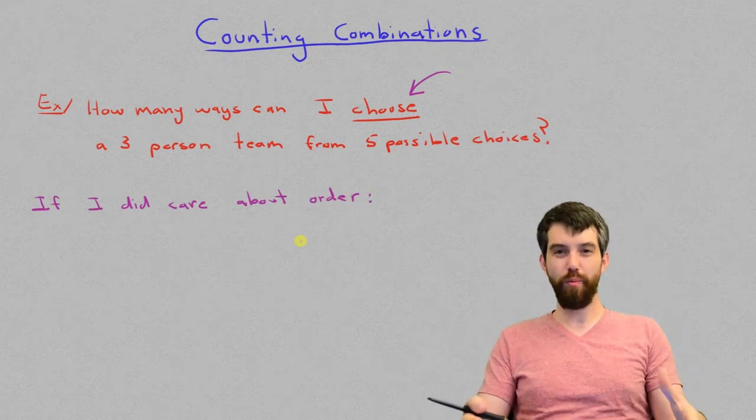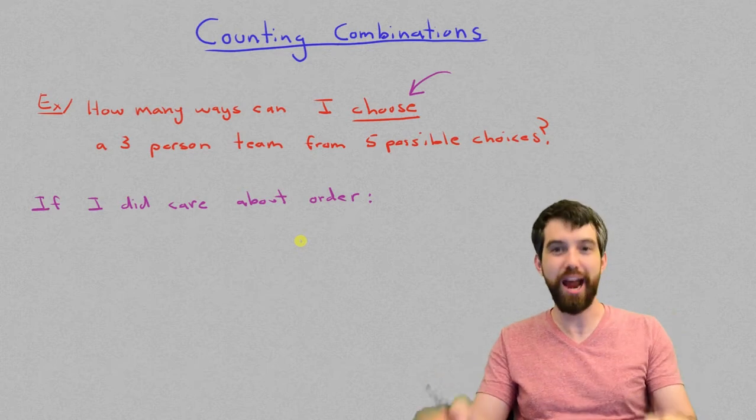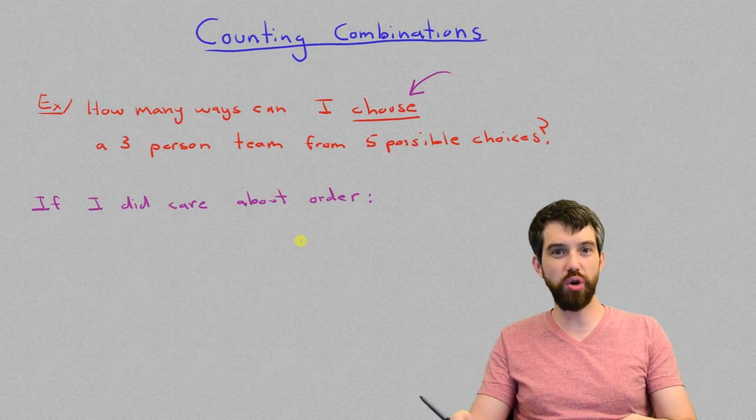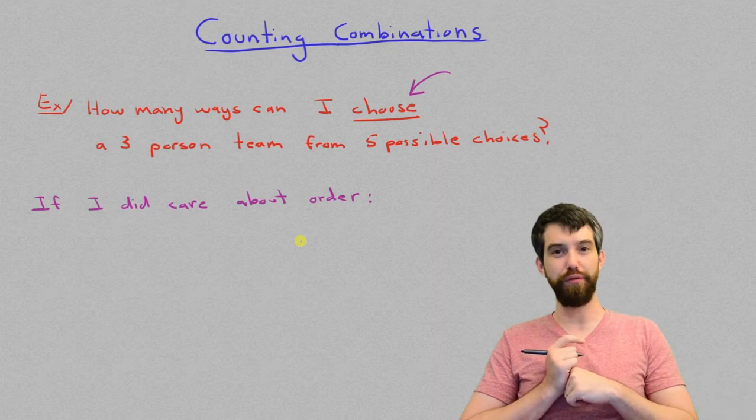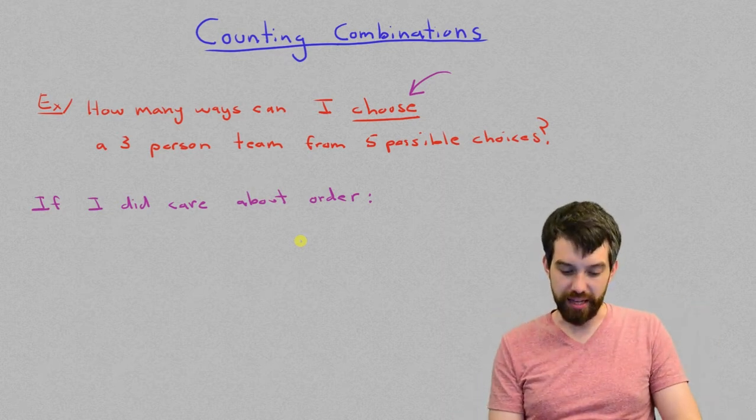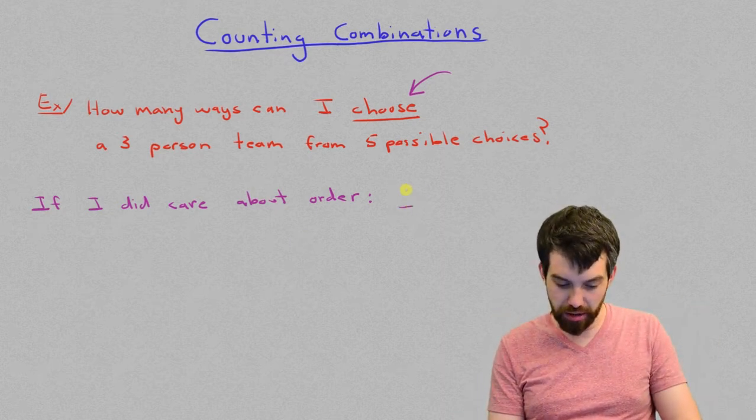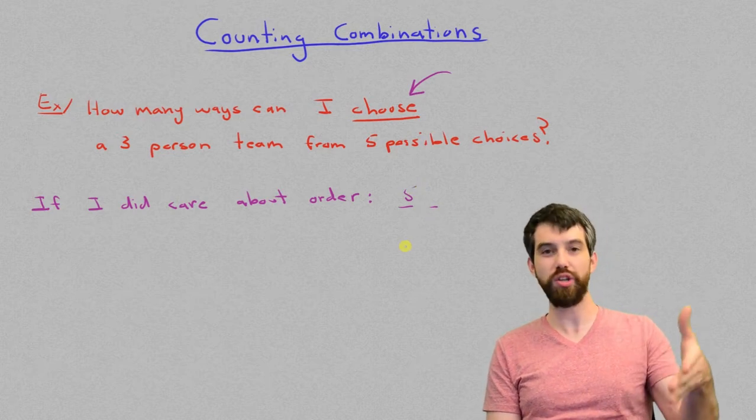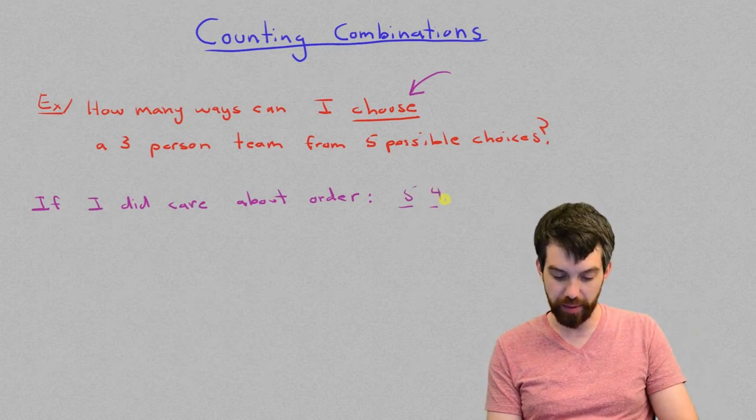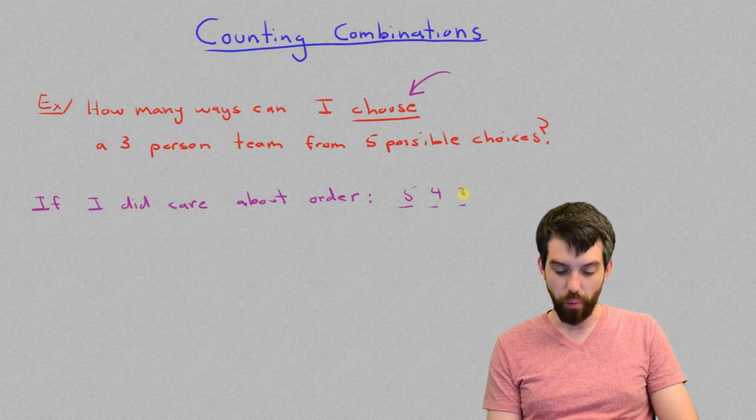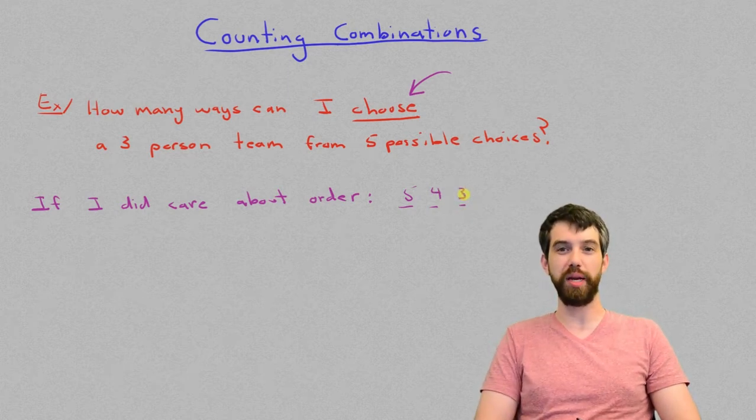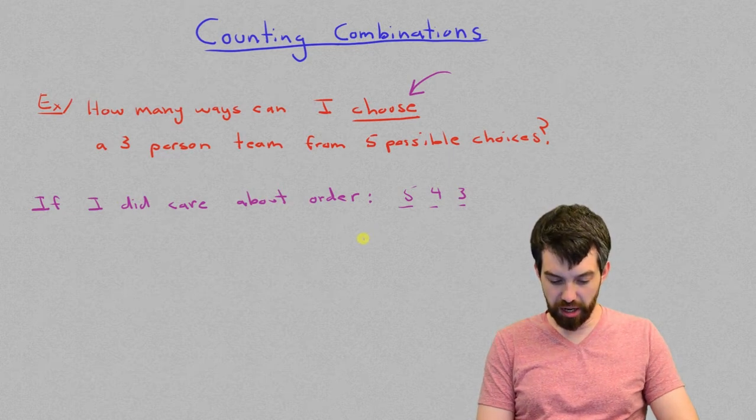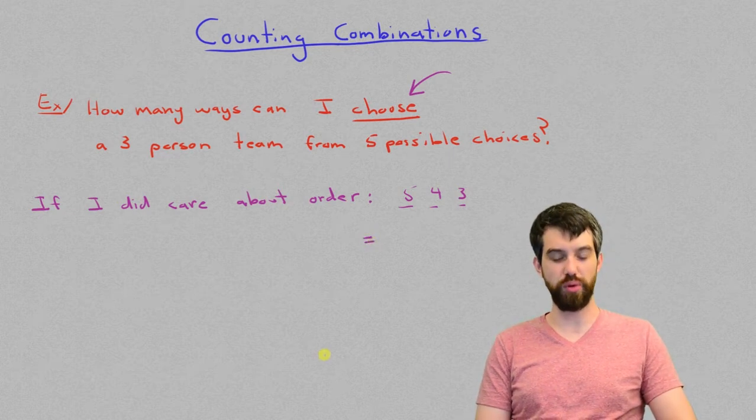Now if this problem was one where we did care about order, then we could have done it by the methods that we've seen before. We would say something like this, that for the first person there's five possibilities, that for the second person one's already used up so there's four possibilities, and that for the third one where you've used up two, there's only three possibilities.